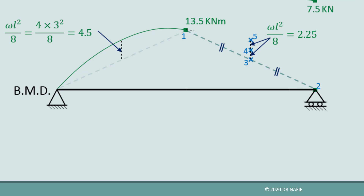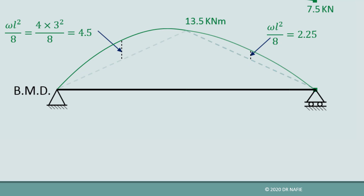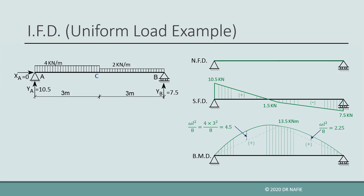The value of WL²/8 in this case will be calculated as 2 kilonewtons per meter multiplied by the square of 3 meters divided by 8, giving a value of 2.25 kilonewton meters. After connecting all the calculated values, the final diagrams are produced as shown.